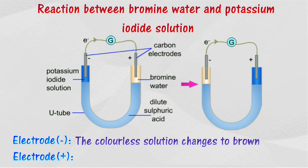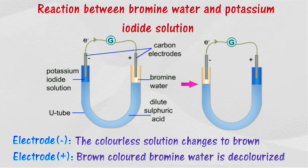The colorless solution of potassium iodide changes to brown, and the brown colored bromine water is decolorized.